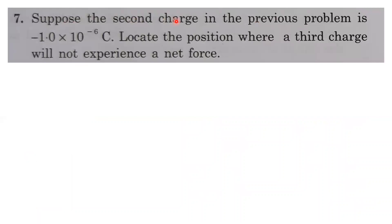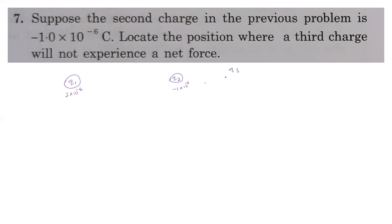Next problem: suppose the second charge in the previous problem is −1×10⁻⁶ C. Locate the position where a third charge will not experience a net force. Here the two charges are opposite in sign: q1 = +2×10⁻⁶ C and q2 = −1×10⁻⁶ C. The third charge should be placed to the right of the smaller charge.